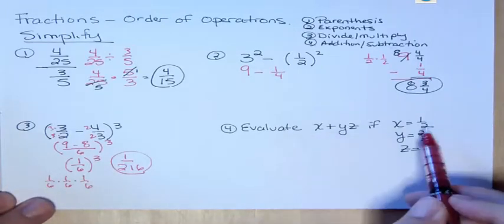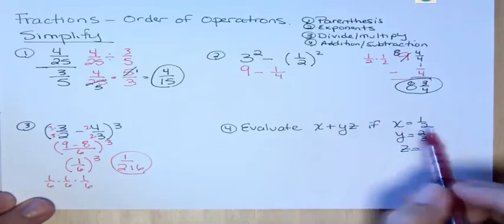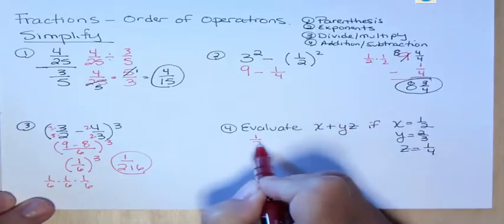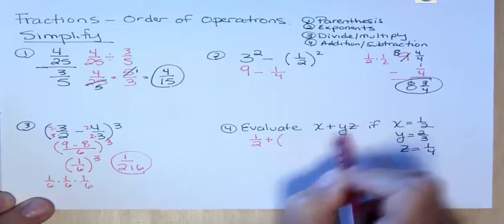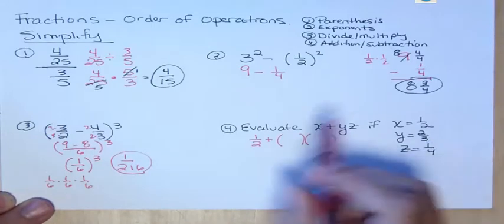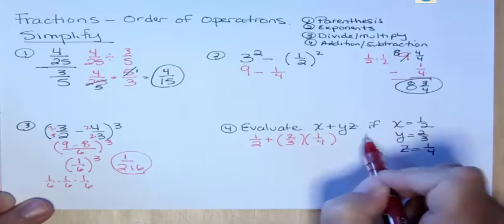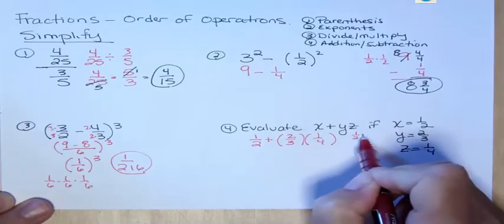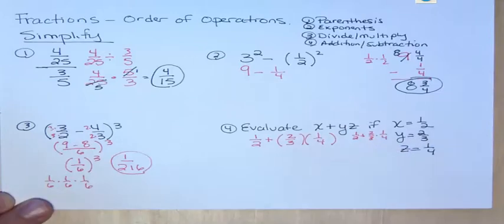Okay, evaluate this expression if we know X is 1/2, Y is 2/3, and Z is 1/4. Well, X is 1/2, Y is 2/3. Now here, these two things are being multiplied. So I'm going to put those two things in parentheses to show that I'm multiplying them. 2/3 and 1/4. Another way I could have written that expression is 1/2 plus 2/3 times 1/4, right? As long as I'm showing multiplication in some way, I'm okay. So I have addition and multiplication. I need to do the multiplication first.